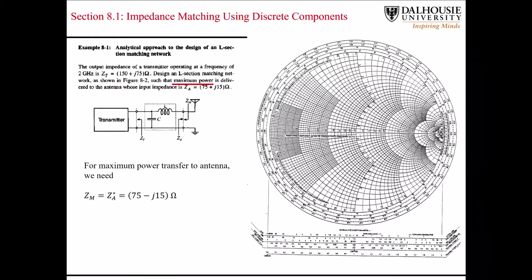One thing to make note of here is that in this example we are looking to match for maximum power delivery. We want maximum power transfer into the antenna. So whenever you're doing any kind of matching network and the goal is to maximize power transfer, you always want to transform one impedance to the complex conjugate impedance of whatever you're trying to match to.